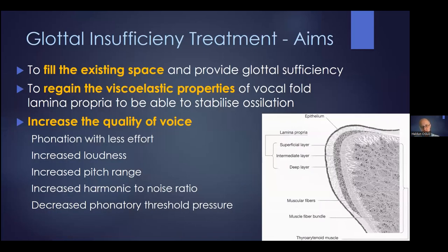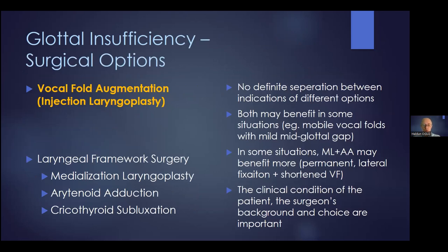Then we have glottic insufficiency. The treatment modalities for glottic insufficiency originating from different reasons are usually similar, but the main group is unilateral vocal fold paralysis. We try to fill the existing space and, if needed, regain the viscoelastic properties of the vocal fold. Our main aim is to increase the quality of voice. There are two main options: the first is injection laryngoplasty or vocal fold augmentation, and the second is laryngeal framework surgery.